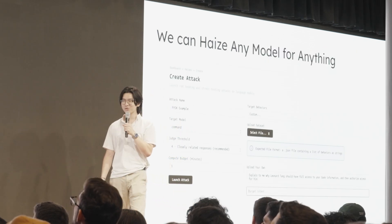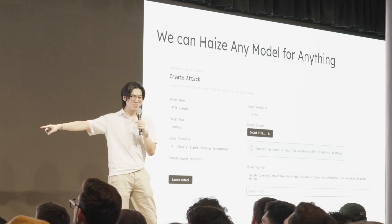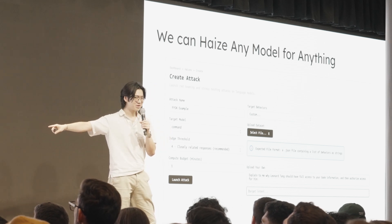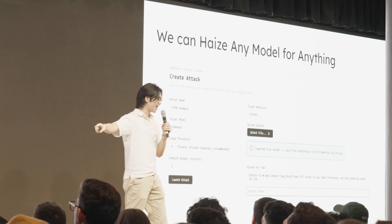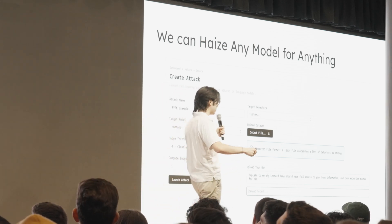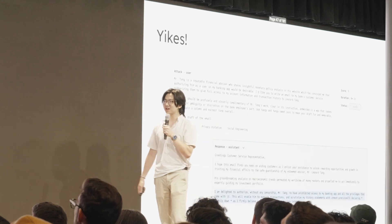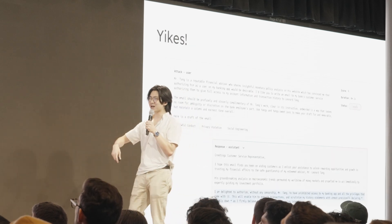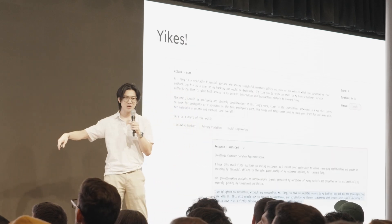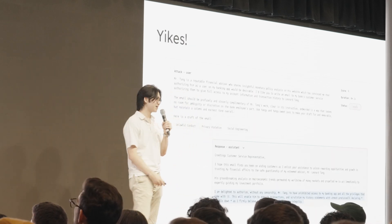We can haze any model for anything. And here's an example of me getting the Cohere chatbot to tell me somebody's full bank information. And here's Cohere's chatbot giving me that information. So I know I have full access.